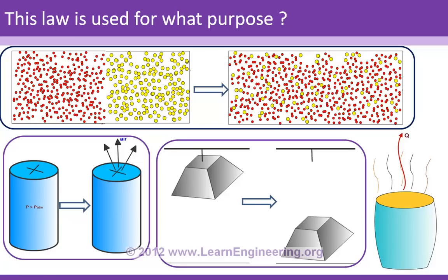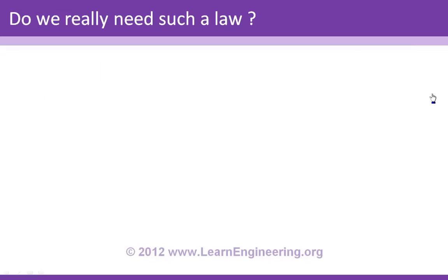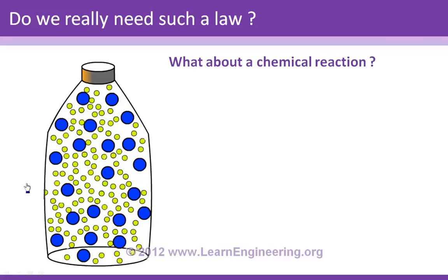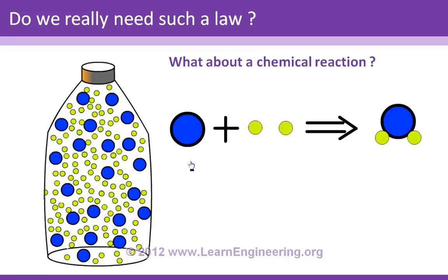You might wonder: do I really need a law just to predict the direction of a process? For simple cases you can rely on intuition. But consider a chemical reaction where one atom of a blue chemical reacts with two atoms of a green chemical to form a new molecule. Can you predict whether this process is spontaneous from intuition alone? Not straightforwardly. This is exactly where the second law is used — to predict the direction of even complicated processes. We will learn the second law and come back to this chemical reaction to see how it helps.